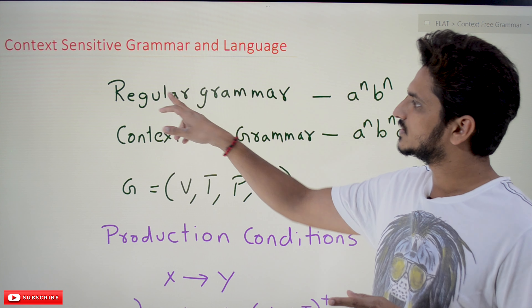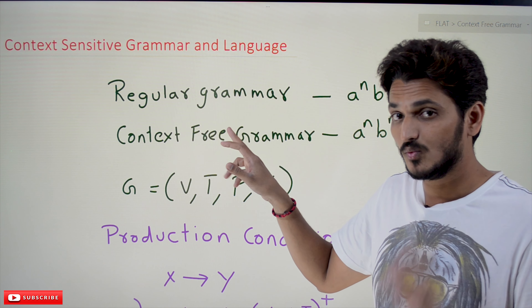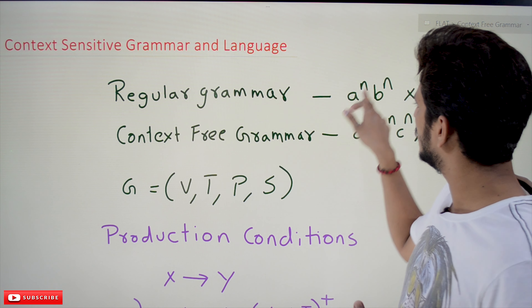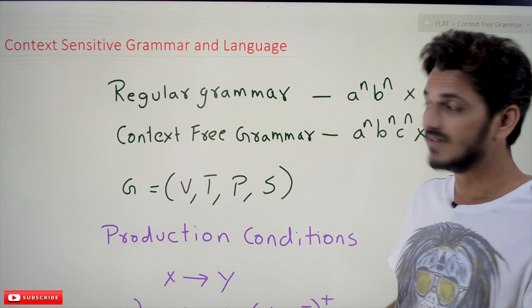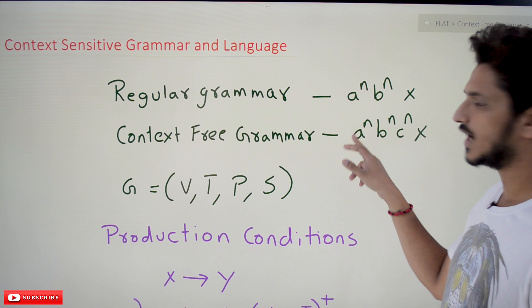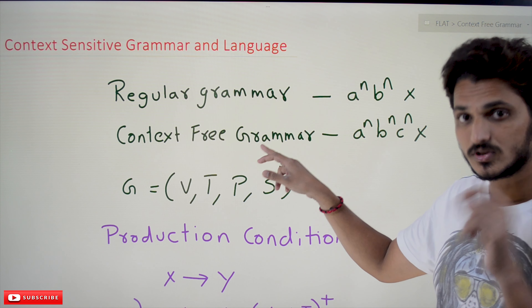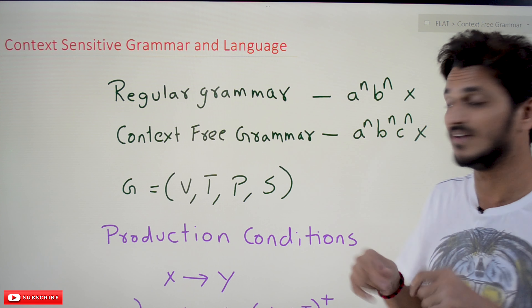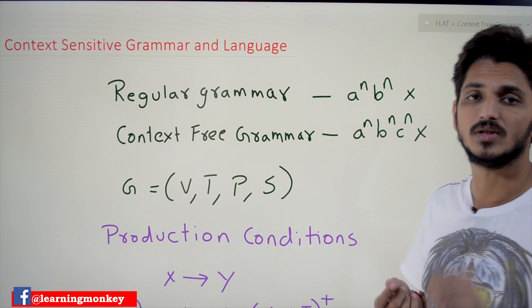Previously we discussed about regular grammar, and we cannot define some languages using regular grammar. One of those languages is a^n b^n, and it is not defined using a regular grammar. Similarly, we already defined context free grammar and we cannot define some languages using a context free grammar. One such language is a^n b^n c^n, but we can define this language using context sensitive grammar.